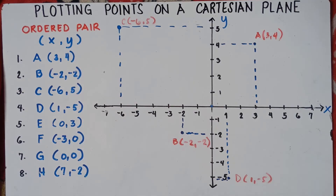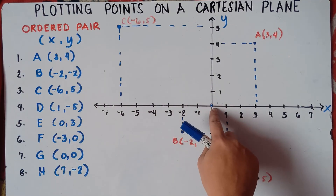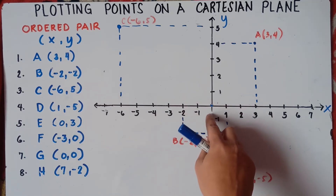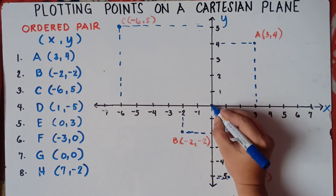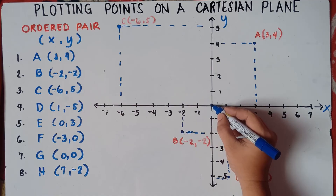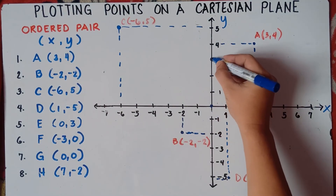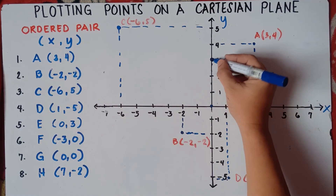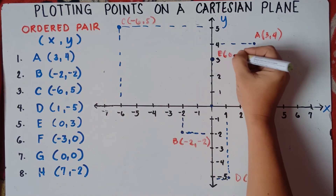For point E, x is 0 and y is 3. Since x is 0, you will not move right or left — just stay at the center. Then y is positive 3, so move 3 units upward — 1, 2, 3. You don't need broken lines since you already have the straight y-axis line. Label the point: E is (0, 3).